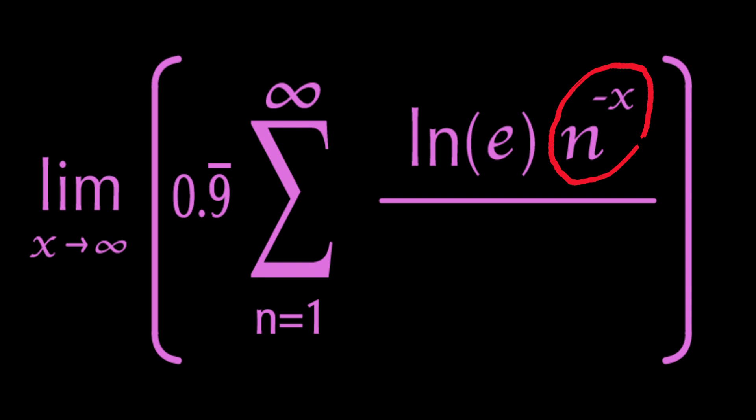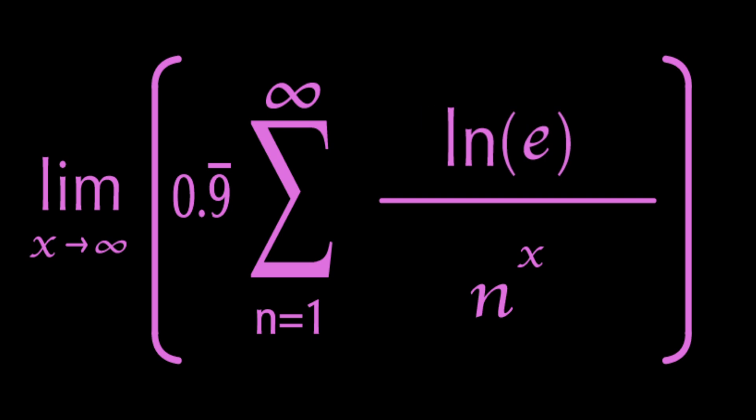The same goes for this guy. The negative on the exponent simply moves it below the division line. Again, trust me. I studied magic. I mean math.